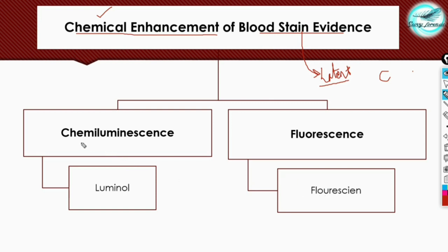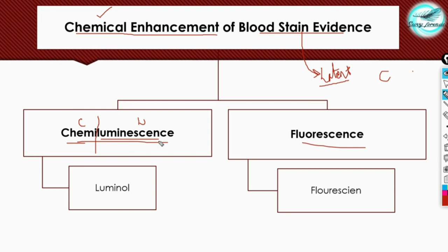First we need to differentiate between chemiluminescence and fluorescence assays. The term 'chemiluminescence' can be divided into two parts: 'chemi' and 'luminescence.' Luminescence means light, while chemi means chemical. So chemiluminescence is the process through which light is emitted as a product of a reaction when chemical entities react and emit light.